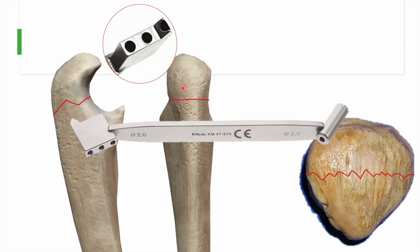Once reduction is done, two parallel K-wires must be passed, covering the broadest area of the fractured bone. In olecranon fractures, the two wires should span most of the olecranon; in patella fractures, they should cover most of the superior surface of the patella. A K-wire guide can be used to assist with this.